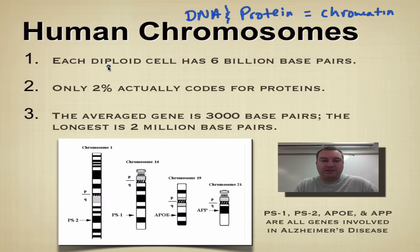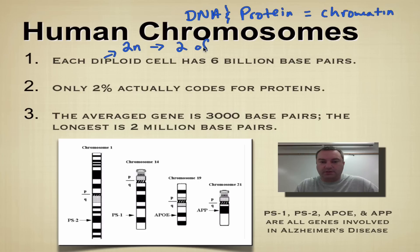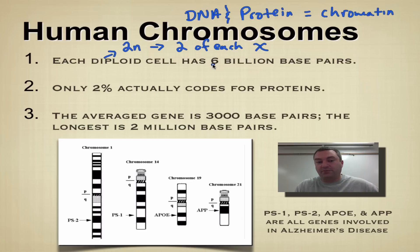Now, each diploid cell — remember, diploid, the symbol for diploid is 2N — means that you have two of each type of chromosome. Remember, the human genome has 3 billion base pairs. So how did you get six? You got some from your mommy and you got some from your daddy — maternal chromosomes and paternal chromosomes.